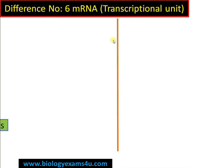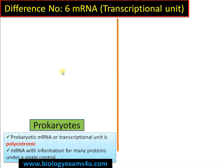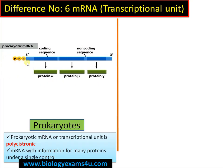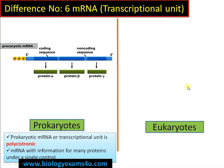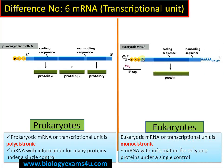Difference number six is regarding the mRNA formed. Prokaryotic mRNA is polycistronic — a single mRNA under a single promoter can carry coding information for multiple proteins (e.g., protein alpha, beta, gamma). In eukaryotes, mRNA is monocistronic — each mRNA carries information for only a single protein under a single promoter control.